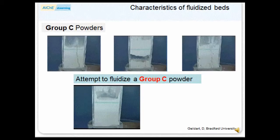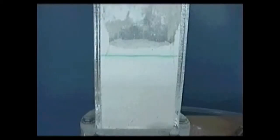Group C powders are the very fine, cohesive powders. They are actually incapable of fluidization in the strict sense.